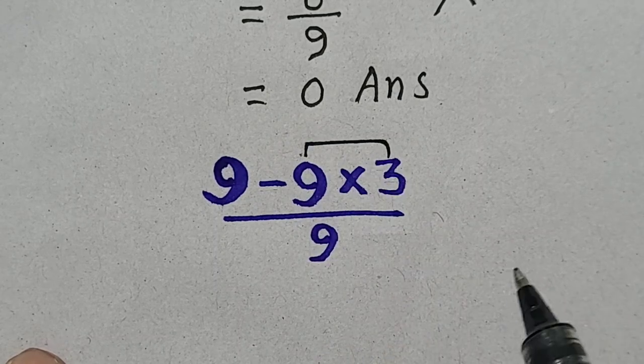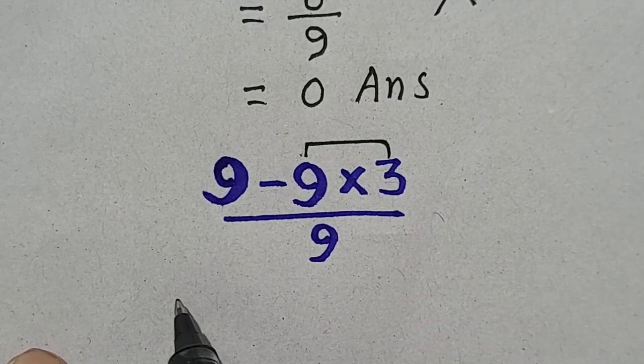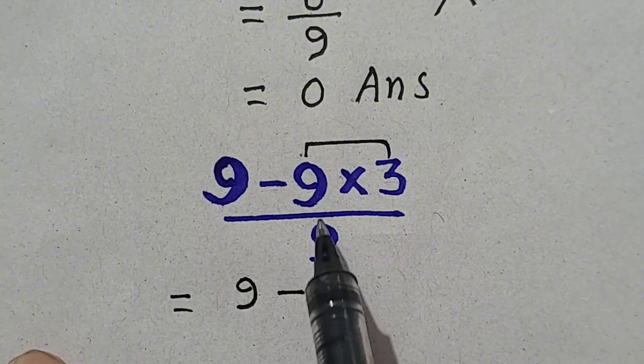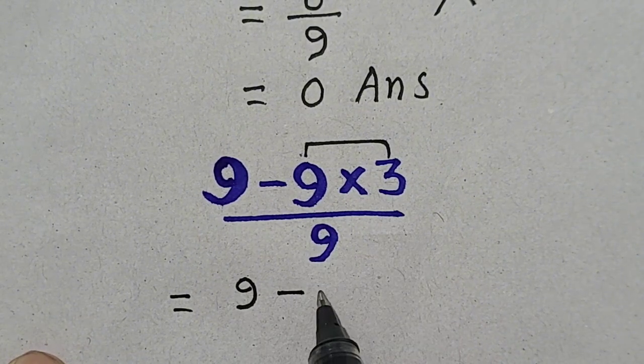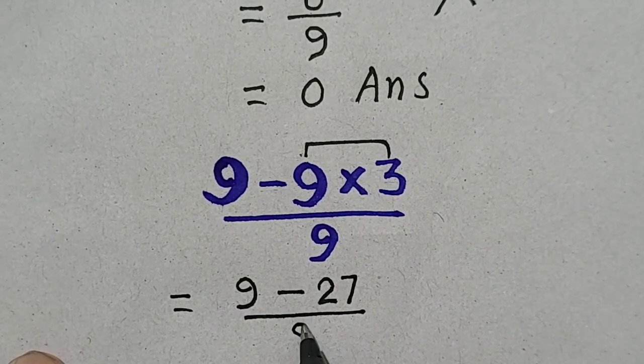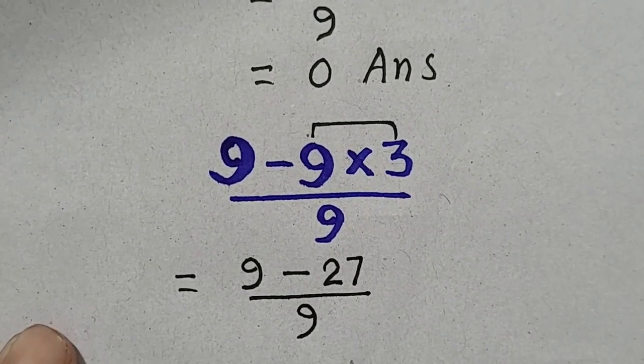So first of all, I have to solve this multiplication. So it will be 9 minus 9 times 3 will be equal to 27 divided by 9.